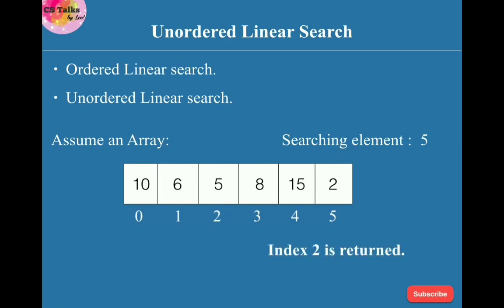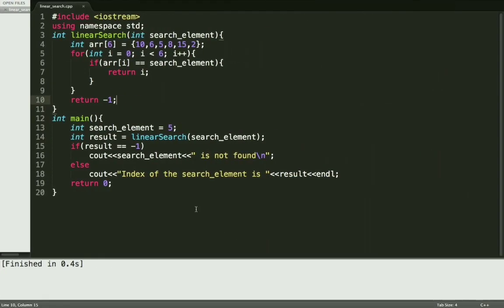this algorithm in a programmatic way. Here I have written a function called linearSearch whose argument is search_element and the return type is integer. Inside the main function, I have declared one variable called search_element and initialized with the value 5, and I called the linearSearch function and passed the search_element as its argument. Now